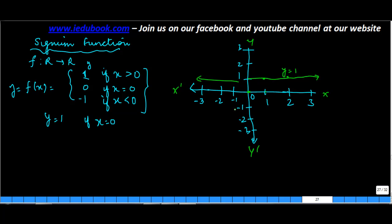So y is equal to -1 if x is equal to -1. Y is equal to -1 if x is equal to -2. So this is a line which comes parallel to the x-axis.